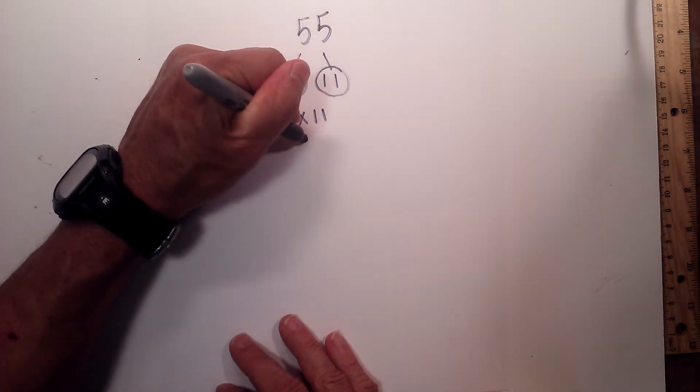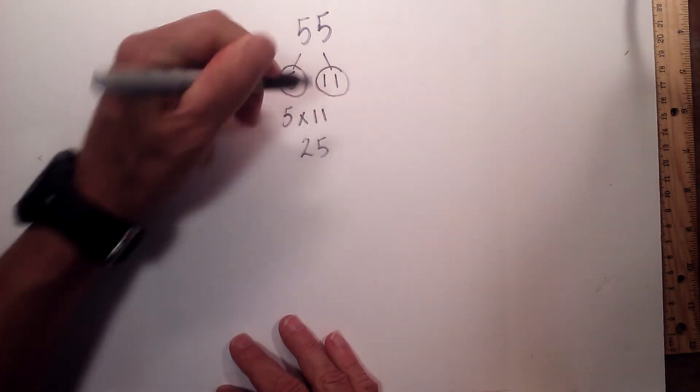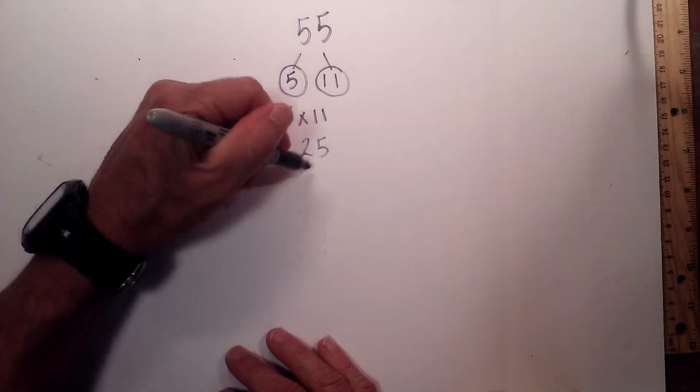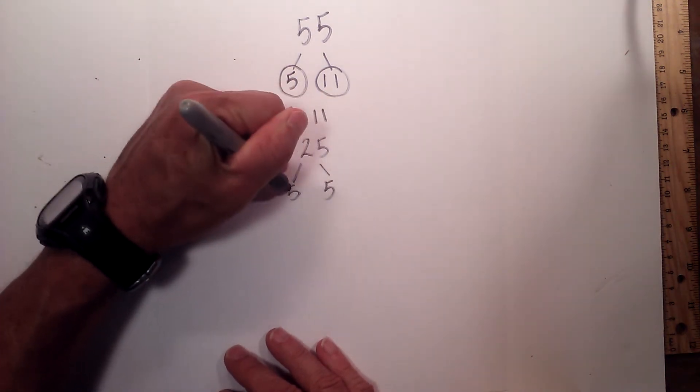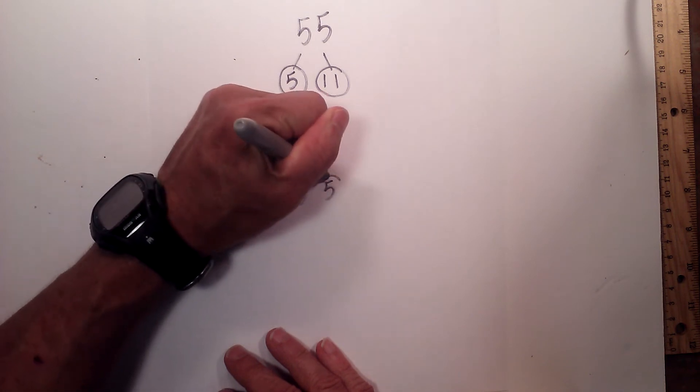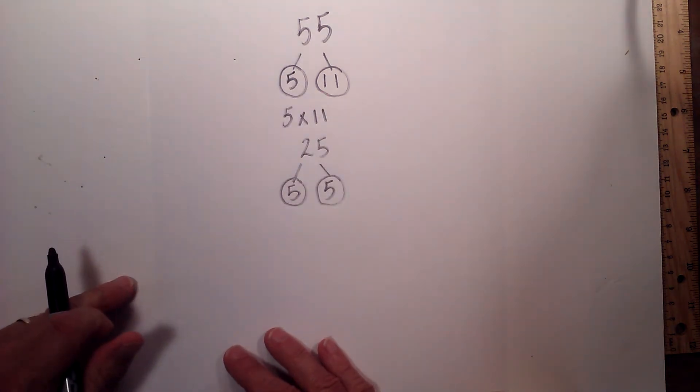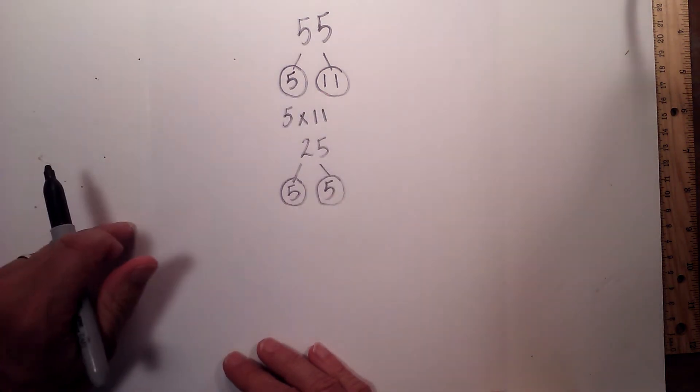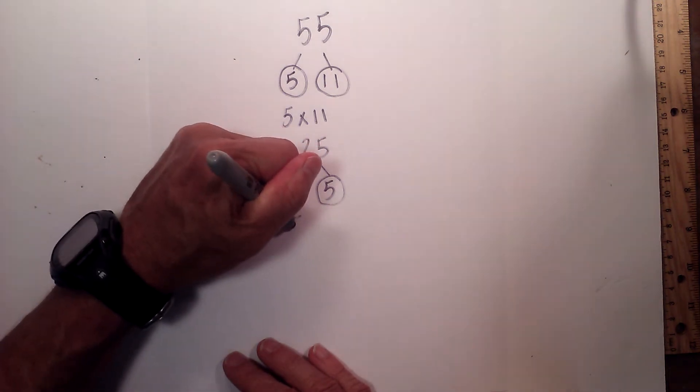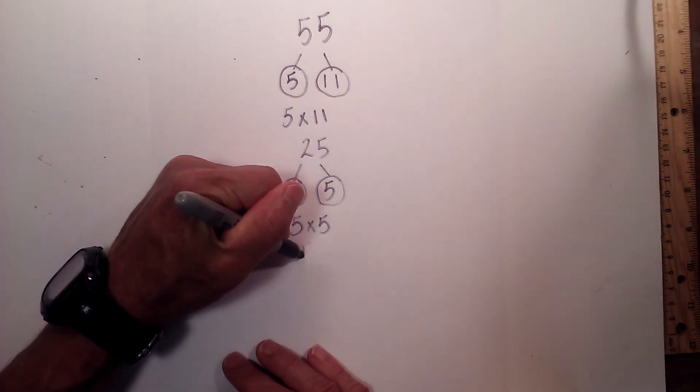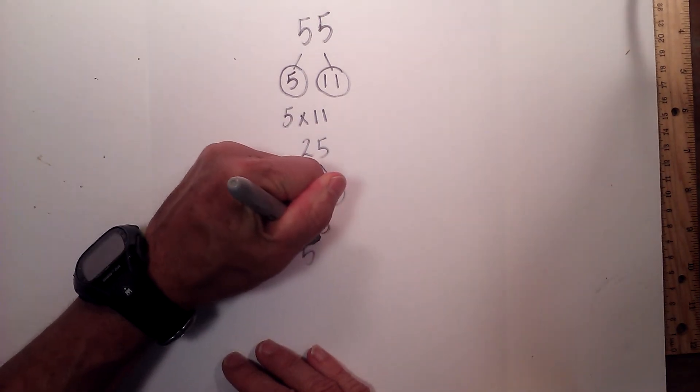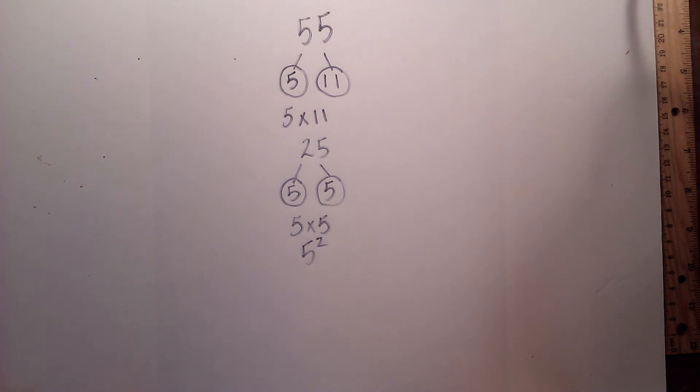Now let's look at 25 and it is equally short. I know that 5 times 5 equals 25. They were both prime numbers so I will circle both of them. We are already down to just prime numbers. So the prime factorization of 25 is 5 times 5 or you can write it 5 squared.